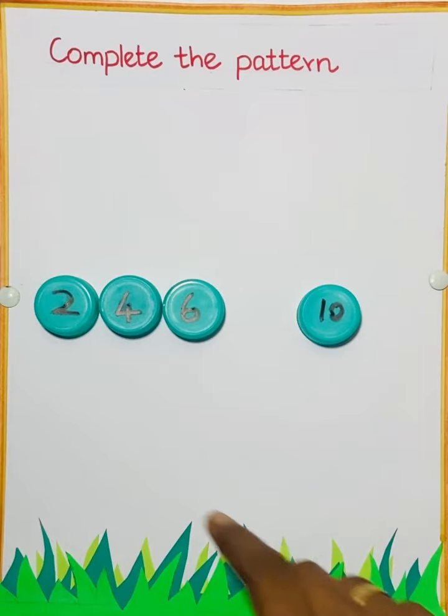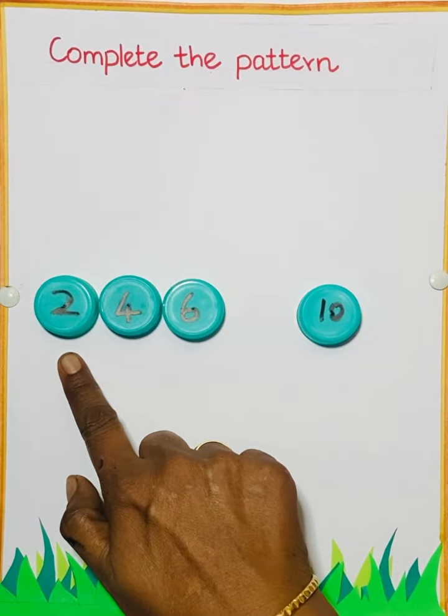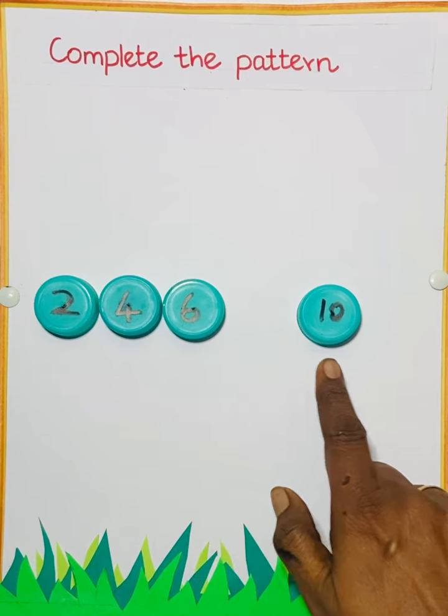Complete the pattern. Read the number 2, 4, 6, dash, 10.